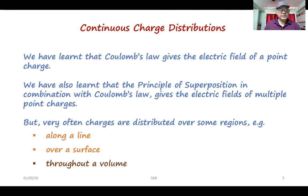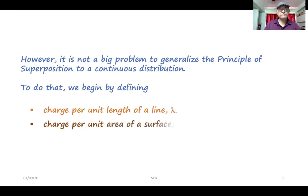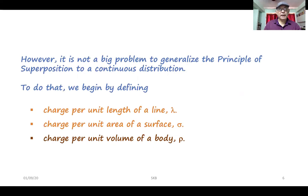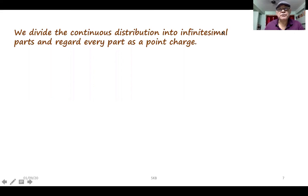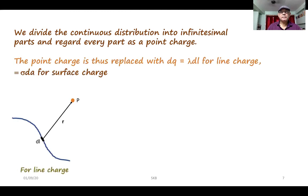But very often charges are distributed over some regions, for example along a line, over a surface, or throughout a volume. It is not a big problem to generalize the principle of superposition to a continuous distribution. We begin by defining charge per unit length of a line as lambda, charge per unit area of a surface as sigma, and charge per unit volume of a body as rho.